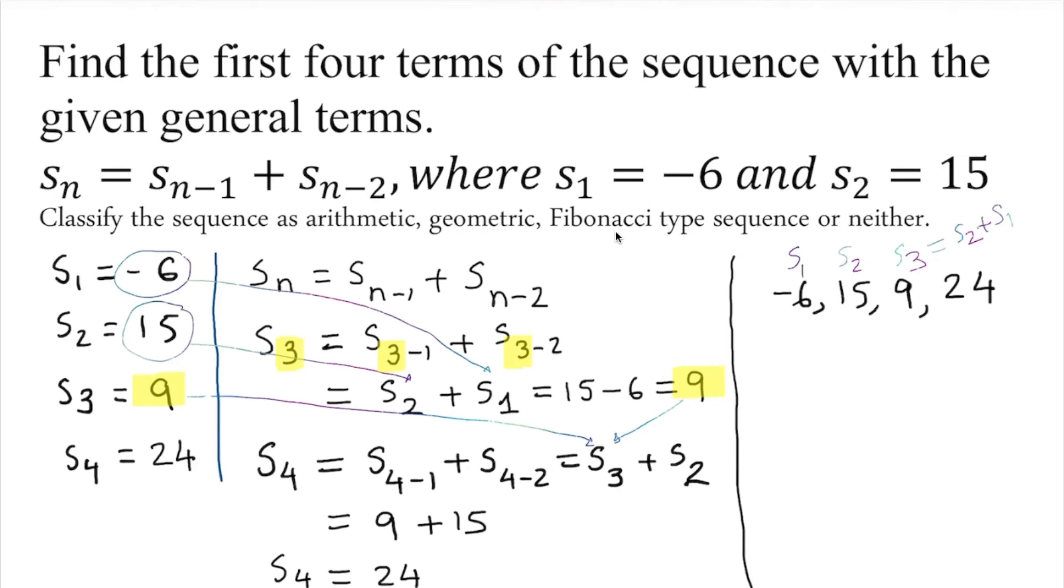Since it satisfies the condition, we have a Fibonacci-type sequence. This is what we're supposed to say. This one is Fibonacci-type because in Fibonacci, s_3 is s_2 plus s_1. That is the condition for a Fibonacci sequence.